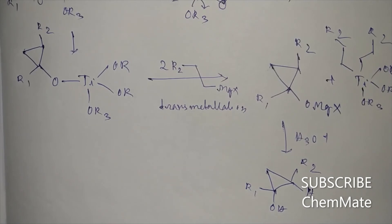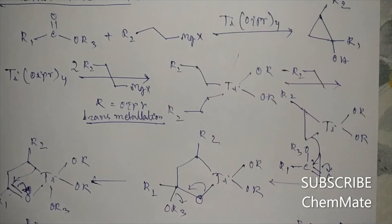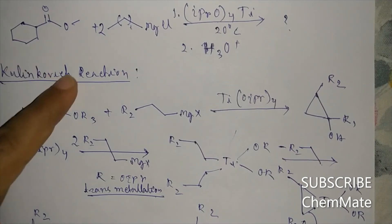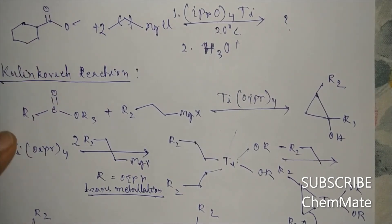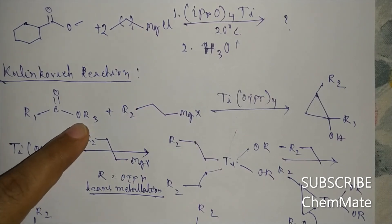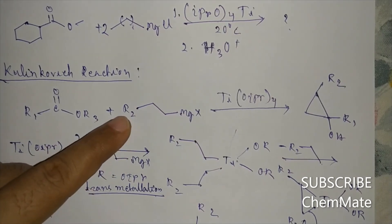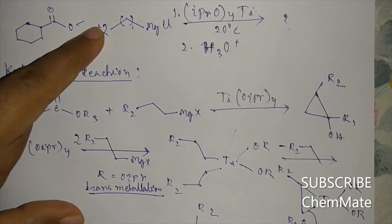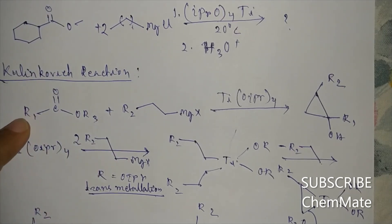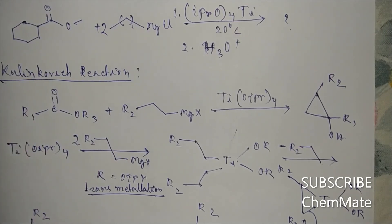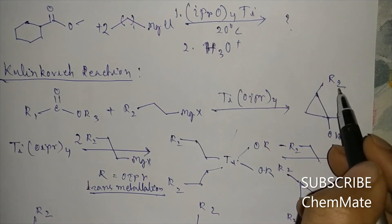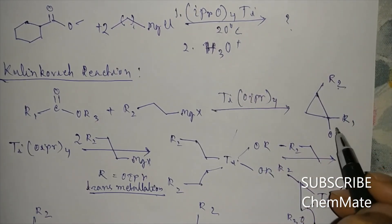In our given reaction, the ester has R1 as the cyclohexyl group and R2 as hydrogen. So R2 will be hydrogen and R1 will be the cyclohexyl group, which gives us the specific cyclopropanol product for this reaction.